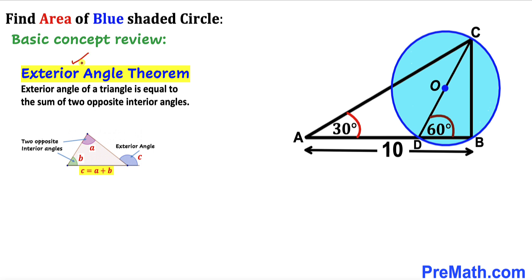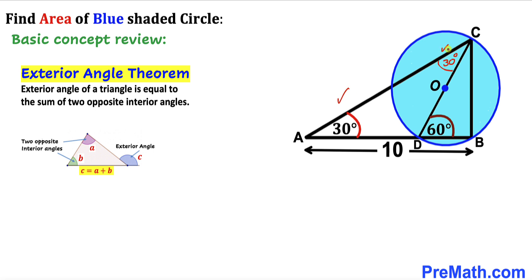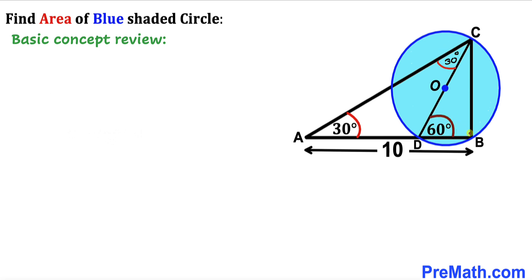Let's recall the exterior angle theorem. According to this theorem, the exterior angle of a triangle is equal to the sum of the two opposite interior angles. In this problem, 60 degrees is our exterior angle, whereas 30 degrees and the unknown angle are our two opposite interior angles. Therefore, this opposite interior angle is 30 degrees as well, since their sum equals 60 degrees.